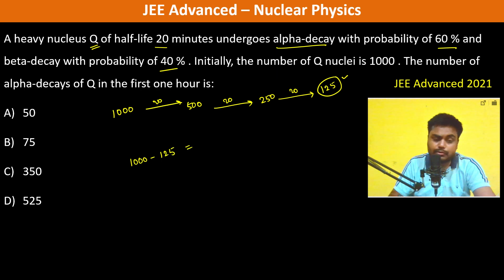So 875 nucleus has decayed. The number of alpha decays of Q is going to be 875 into 60%, that is 60 divided by 100.